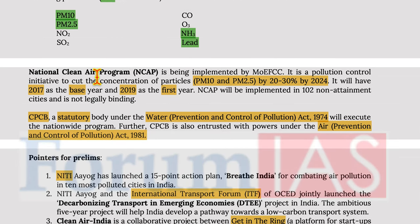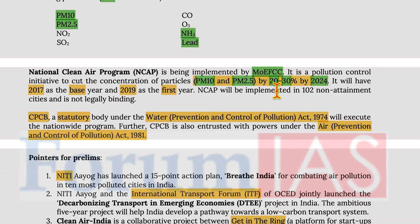Moving on to the National Clean Air Program — it is implemented by the Ministry of Environment, Forest and Climate Change. It is a pollution control initiative to cut the concentration of PM10 and PM2.5 by 20–30% by 2024, with 2017 as the base year and 2019 as the first year. NCAP will be implemented in 102 non-attainment cities.